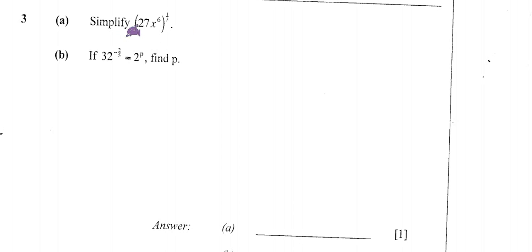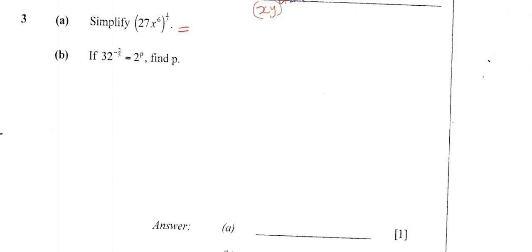Number 3a says: simplify 27x to the power 6, all to the power 1 over 3, using laws of indices. There is a law of indices which says that if we have (x·y) raised to the power a, this gives us x to the power a times y to the power a. So everything in the brackets is affected by the power.